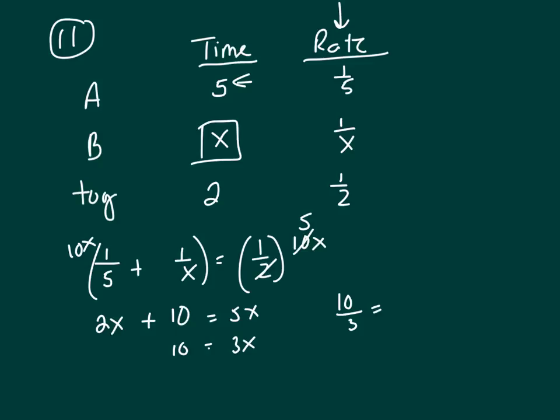This is 10 over 3 equals X. Now, look at your answers, they're in mixed numeral form, so 3 we're going to 10 three times, that gives you 9, with one left over. So, 3 and one-third.